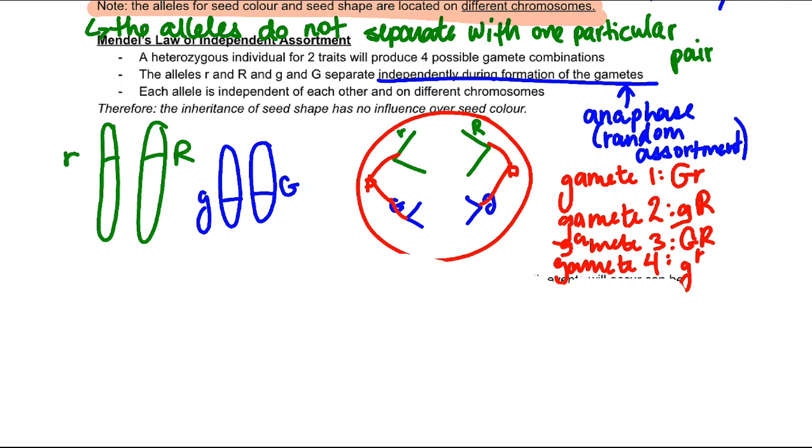One trait does not impact the other. Each allele is independent of each other on different chromosomes. They separate with different probabilistic chances. So that means in the example above where the plant is heterozygous for both traits, that means that it's going to have four possible gamete outcomes.